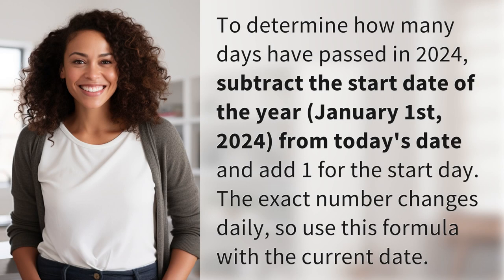To determine how many days have passed in 2024, subtract the start date of the year, January 1st, 2024, from today's date and add one for the start date. The exact number changes daily, so use this formula with the current date.